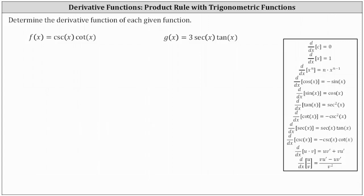We're asked to determine the derivative of each given function. First, we have f of x equals cosecant x times cotangent x. Whenever we have a product of trig functions, we should check to see if it will simplify. In this case, it won't.